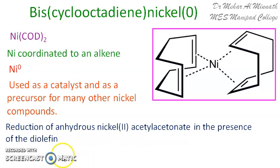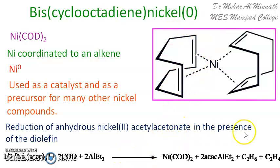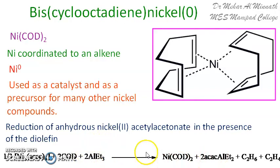Ni(COD)₂ is prepared by the reduction of anhydrous nickel(II) acetylacetonate in the presence of a diolefin — here the diolefin is cyclooctadiene. This reaction is carried out in the presence of triethylaluminum to give the nickel complex. So instead of nickel carbonyl, you can always use this particular reagent, and it is not toxic.